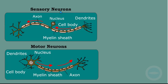Here we have sensory neurons. You need to know how to draw this structure and how to label it — these labels here are the important ones. The difference between sensory neurons and motor neurons is the position of the cell body. With sensory neurons, the cell body is on the side, whereas with motor neurons, the cell body is at the beginning. You also need to know how to draw this and the direction of the impulse.